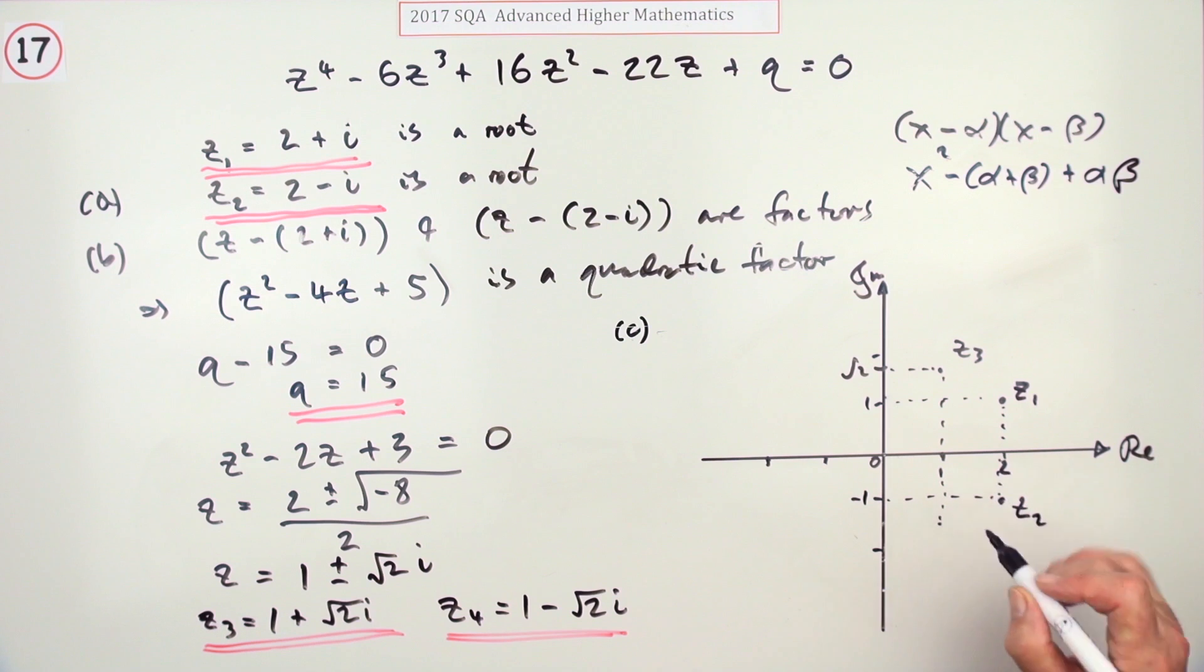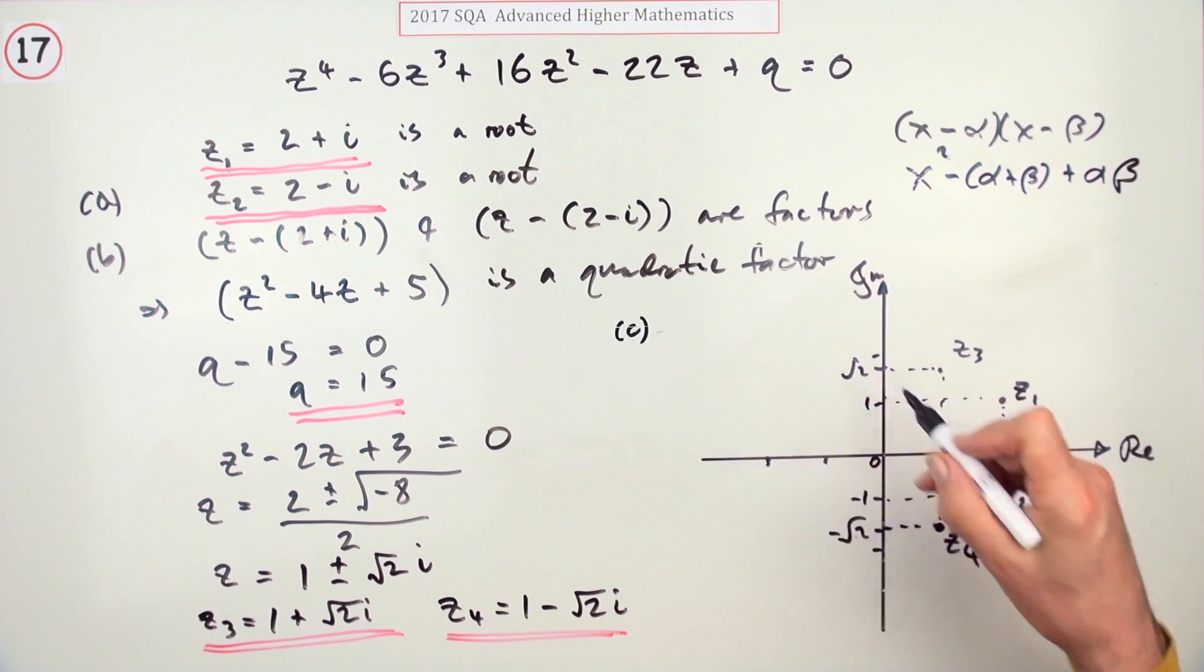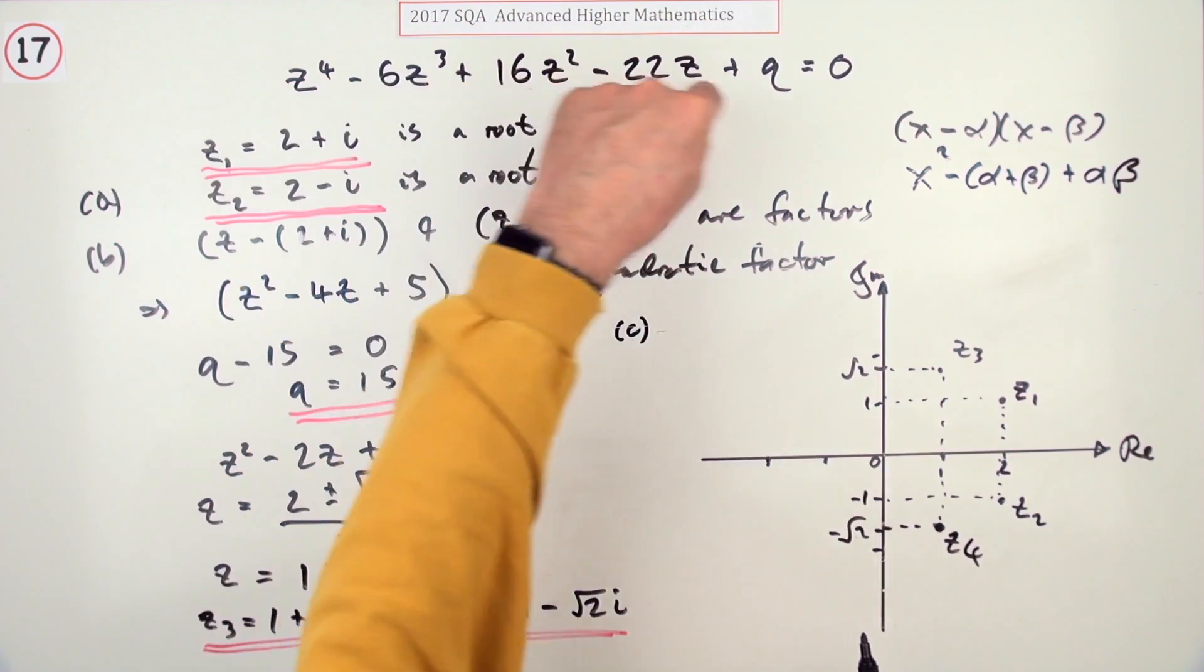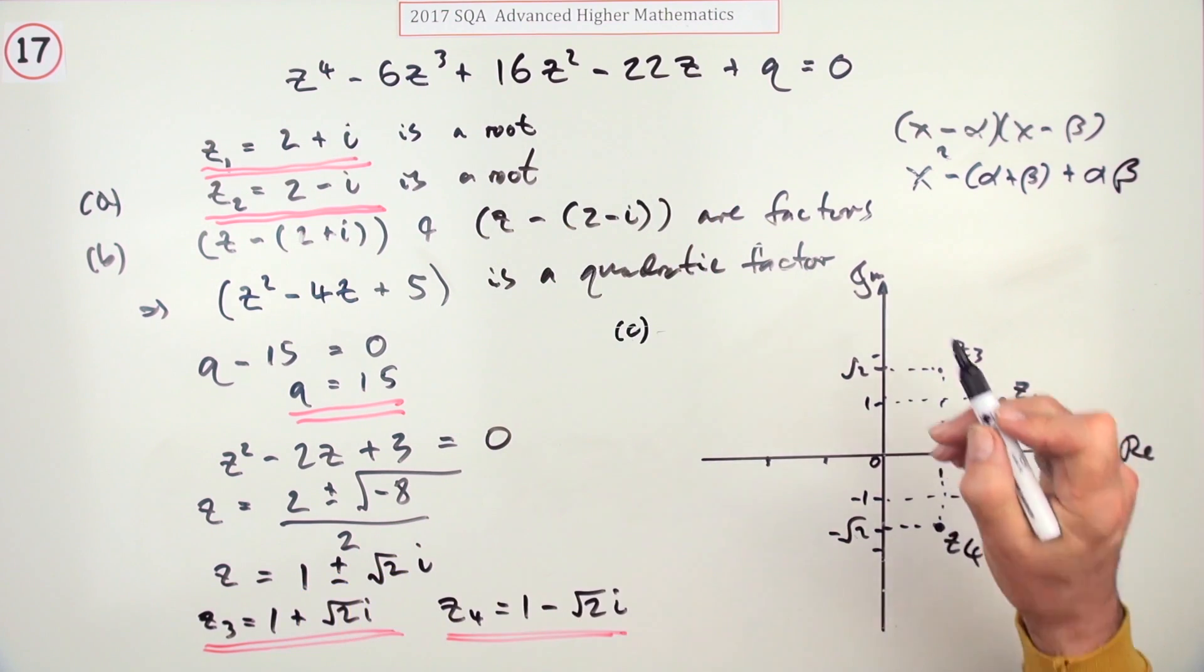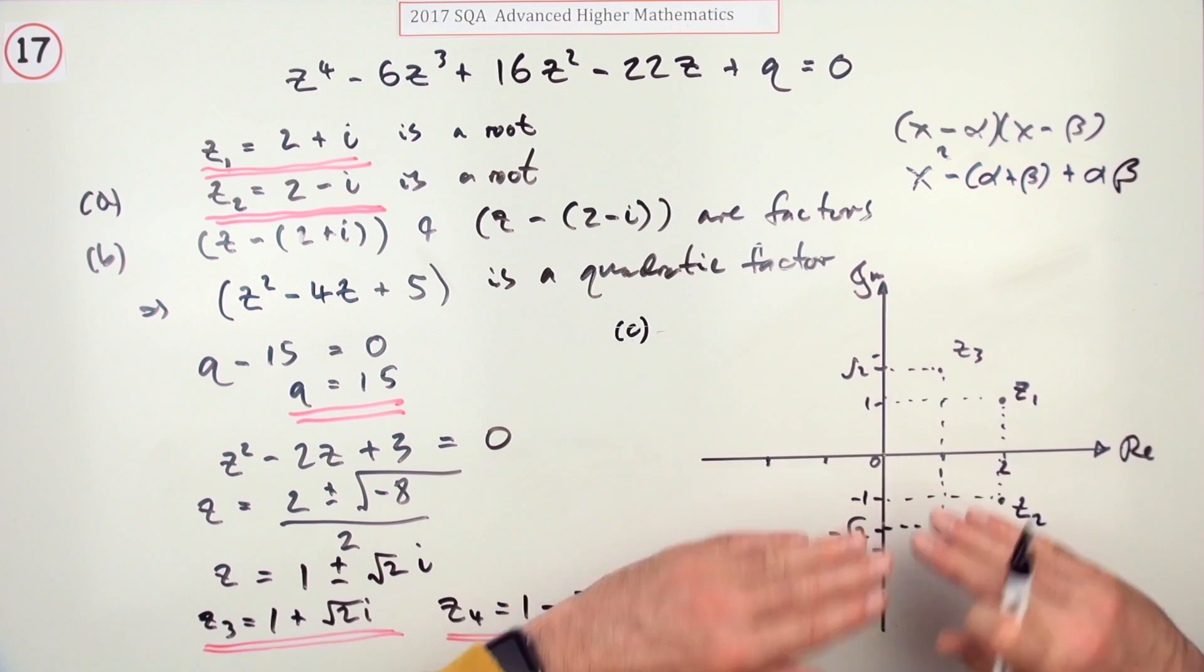Notice they don't lie in a circle because this was a polynomial equation, not just the nth root of a number. The symmetry you get with these polynomials is a reflection about the real axis.